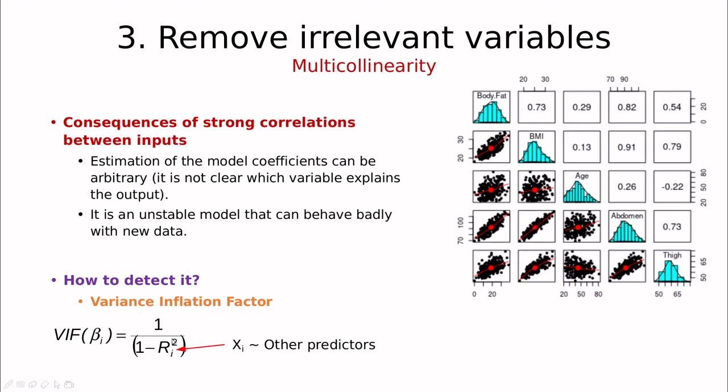If there is no correlation this should be 0 so this would be 1 divided by 1 and when this approaches to 1 meaning that we have strong correlations like for instance with BMI and abdomen this goes to infinity.